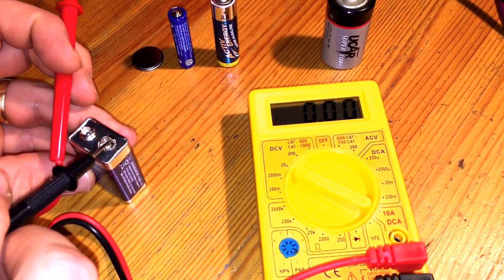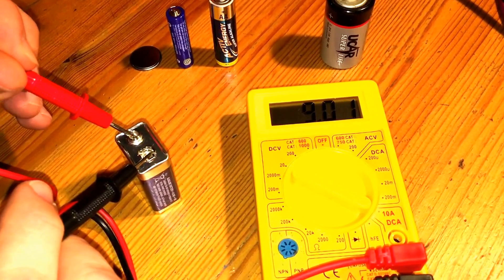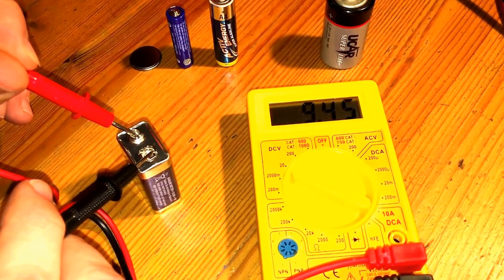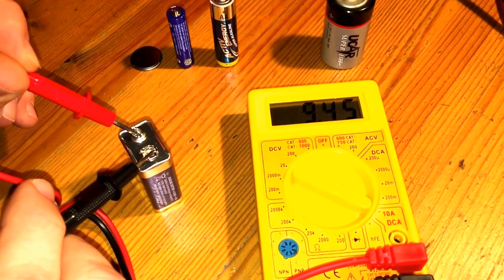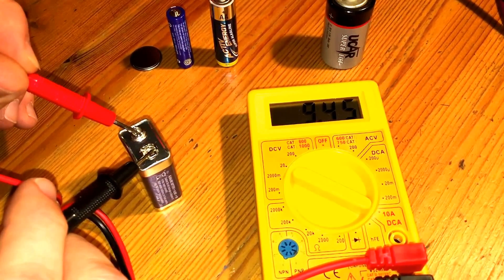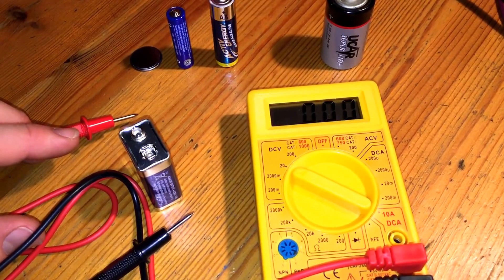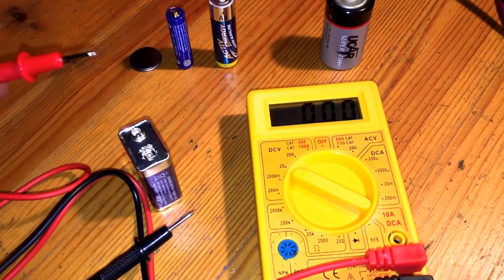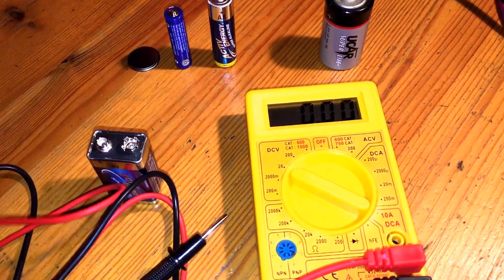We have to take this part over here and the plus area. And we can see 9.5, nearly 9.45 voltage. That means this battery is full by active energy. Nice.